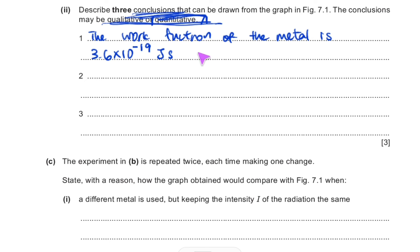That's the first conclusion. The second conclusion is that there is a certain threshold frequency which must be exceeded for electron emission to occur. One of the first observations about photoelectric emission is that it depends on the frequency and not on the intensity. The quantitative value for the threshold frequency is 5.4 × 10¹⁴ Hz.